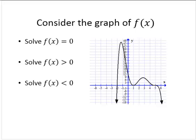Consider the graph of f of x. We're asked to solve f of x equals zero, f of x is greater than zero, and f of x is less than zero. So first, let's solve f of x equals zero. Here we're looking for the x-intercepts. I see one, two, three x-intercepts. So the solution to f of x equals zero is the set containing negative two, one, and five.